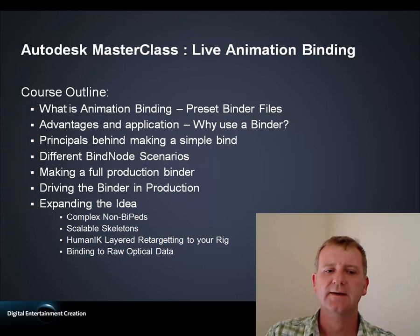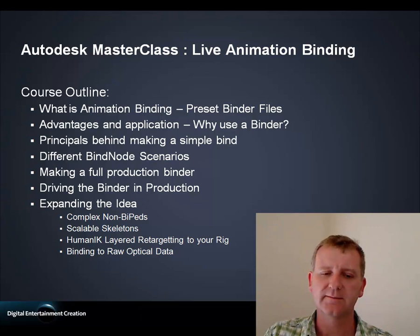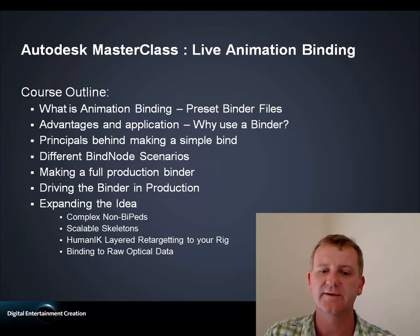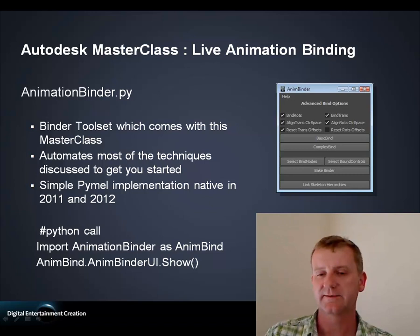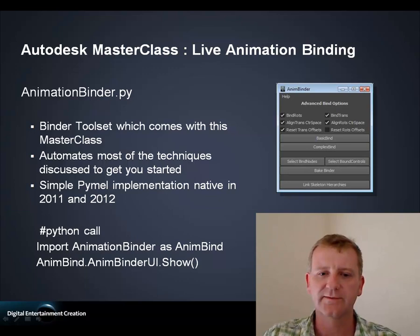We'll then move on to some quite complex ideas. There's a nice example of a quadruped, which shows how this can be expanded to really complicated mapping. Scalable skeletons is how we've traditionally dealt with characters of massive proportional differences. That leads on to Human IK — with 2012, how you can integrate that into the systems to generate effectively a layered retargeting rig. And finally, there's an example of binding to raw optical data. You also get a UI that comes with this, which I'll be using throughout this masterclass to speed things up.